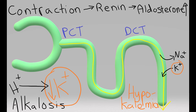Aldosterone has another function, and that's to work on the hydrogen ATPase in the collecting duct. Basically, hydrogen is dumped into the collecting duct. As hydrogen is dumped into the collecting duct, there's less hydrogen in the extracellular fluid, and that leads again to a metabolic alkalosis.